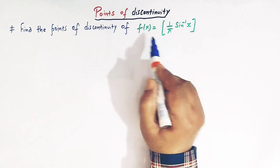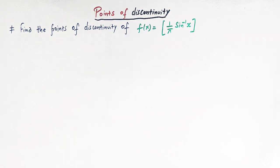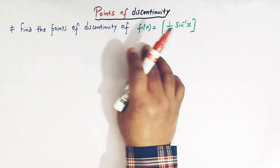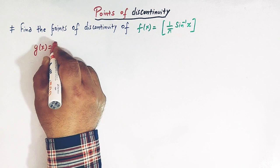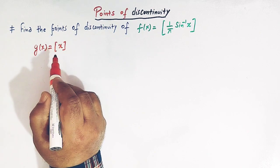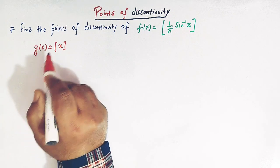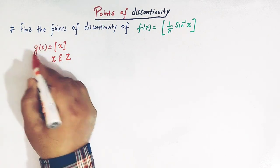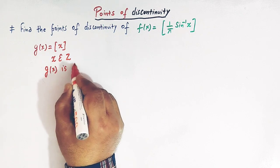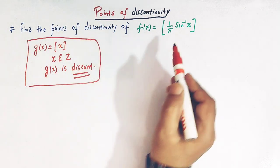We'll find all the values of x for which this function is discontinuous. To solve these types of problems, recall that if g(x) = ⌊x⌋, the greatest integer function, then g(x) is discontinuous whenever x is an integer — that is, whenever x belongs to the set of integers. We'll use this result to solve this problem.